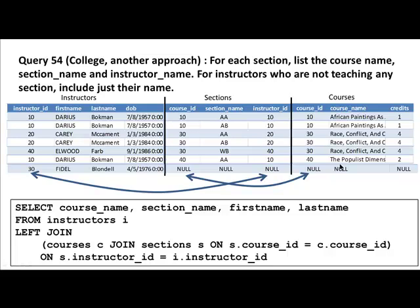So we can achieve this using a left join or a right join. But if you do a right join, then sections and courses naturally got joined first. But if you want to do a left join, then we have to use parentheses to force that sections-courses join to occur first before we have the instructor join.